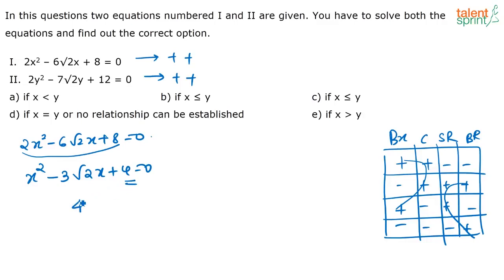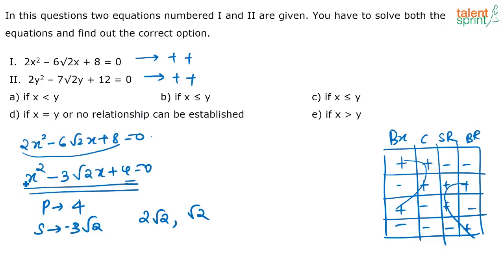Now you need two numbers whose product is 4 and whose sum is -3√2. The two numbers are 2√2 and √2. When you add them you get 3√2, and when you multiply them you get 4. Since the coefficient of x² is 1, you don't need to divide. So the two roots are 2√2 and √2, and both are positive.